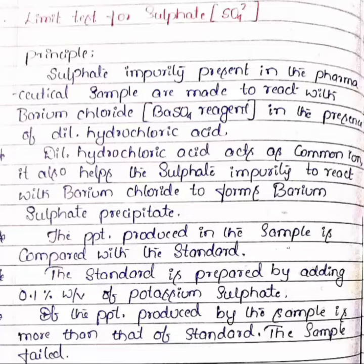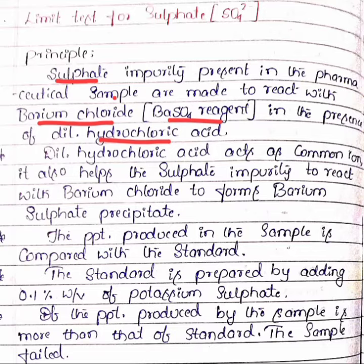The principle of the sulfate limit test: any pharmaceutical sample containing sulfate impurity (SO4 2−) is made to react with barium chloride present in barium sulfate reagent, in the presence of dilute hydrochloric acid. This gives a white precipitate of barium sulfate. The precipitate produced by the sample is compared with a standard, which is prepared by dissolving 0.1% weight by volume of potassium sulfate.